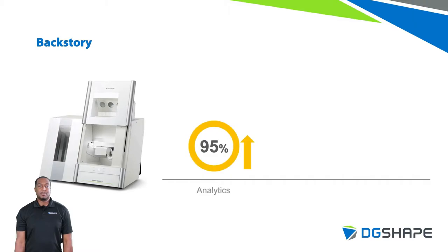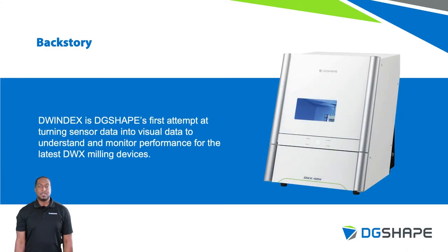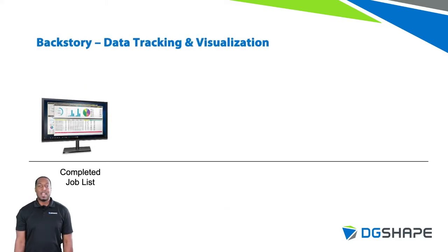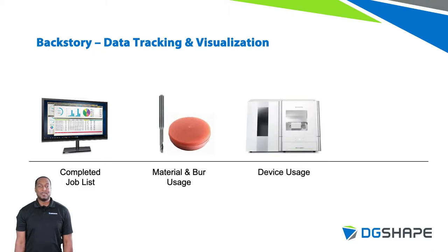Going back to the launch of the DWX 52 DCI, the first version of DW Index was an optional software focused on providing analytics for device usage and ROI data. It was DG Shape's first attempt at turning sensor data into visual data to monitor the performance of the latest DWX dental milling devices. As a user, you could access a daily list of completed jobs, track and review the use of materials in BIRs, and track the progress of customized device usage goals. For users with compatible CAM software, DW Index compared the cost of crown and bridge unit output with the cost of the milling device to track profitability and understand investment return.